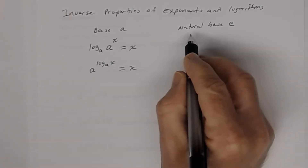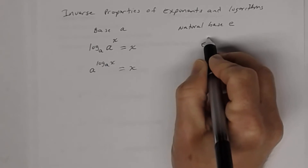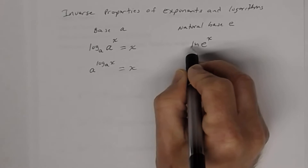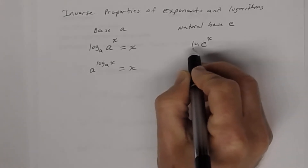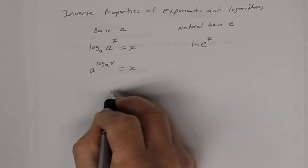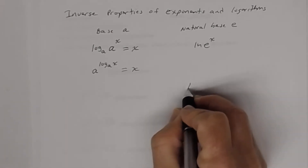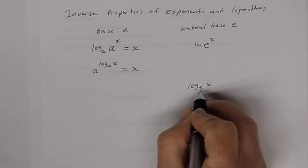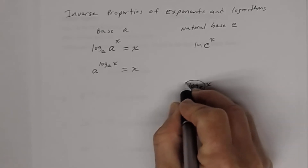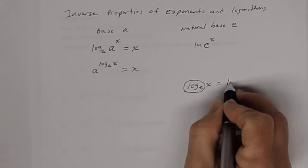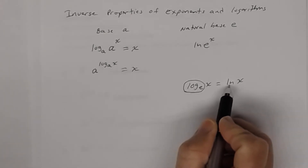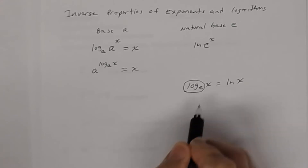Now for the natural base e: if I have e^x and I take the natural log — remember, 'ln' means natural log, which is log base e — so whenever the base is e, that notation means natural logarithm. You're looking at the natural base e.